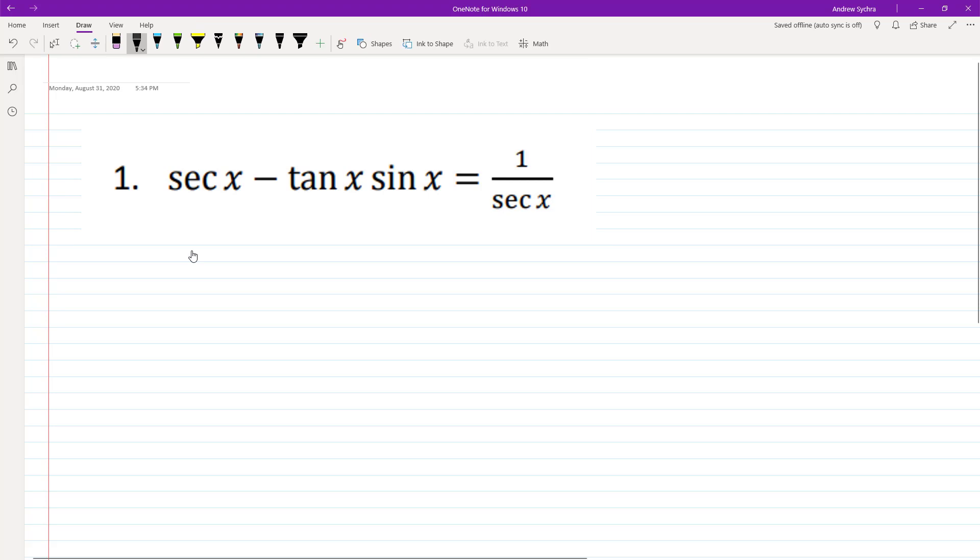What we have here, we'll just convert these into their basic forms. Secant of x becomes 1 over cosine of x minus tangent, so that's going to be sine of x over cosine of x, and then we have the sine of x there, equals 1 over secant.